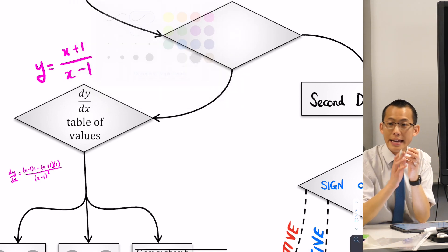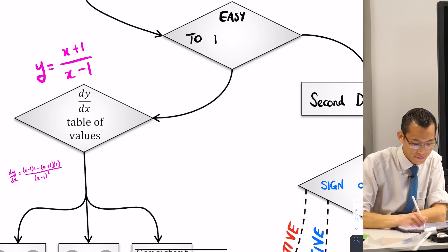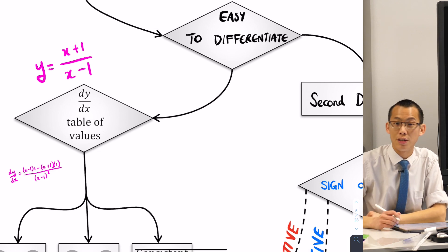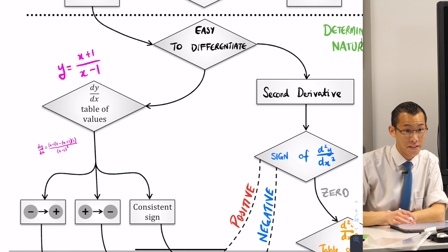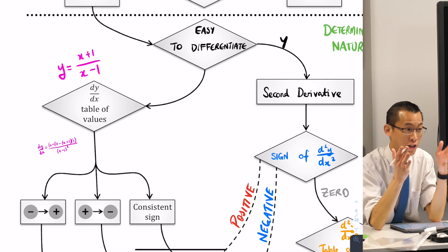My question is, is your function easy to differentiate? If your function is easy to differentiate then do it. Differentiate again, use the second derivative and then off you go, okay?